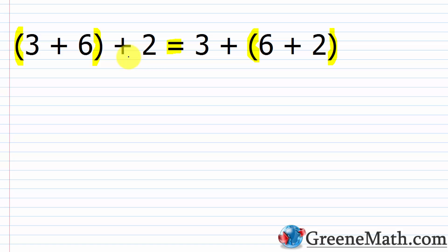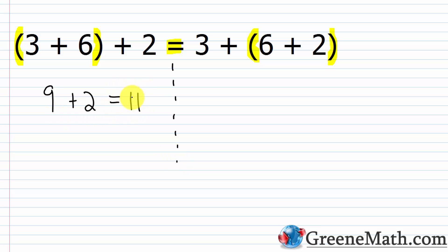Following order of operations, we do operations inside parentheses first. On the left: three plus six is nine, then nine plus two gives eleven. On the right: six plus two is eight, then three plus eight also equals eleven. So the grouping didn't matter — we got the same result either way.